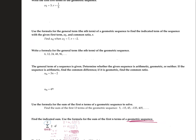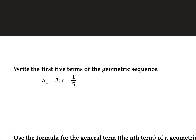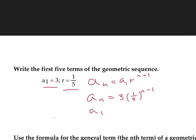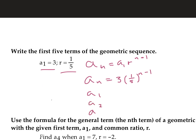Write the first five terms of the geometric sequence. First, come up with our geometric sequence formula: a_sub_n equals a_sub_1 times r to the power of n minus 1. It tells us a_sub_1 and it tells us r — that's all we need. So a_sub_n equals 3 times 1 over 5 to the power of n minus 1. Then plug in 1 through 5 for each term.